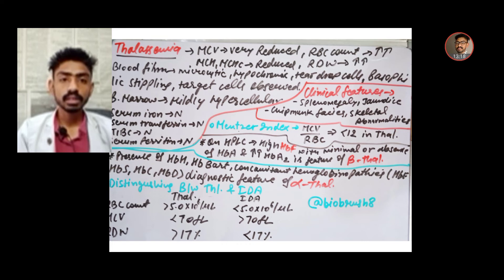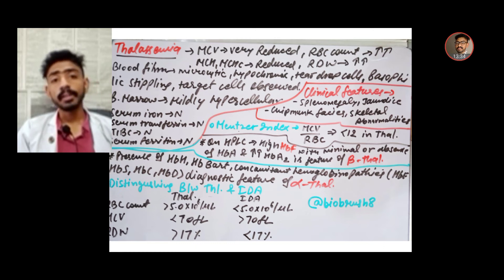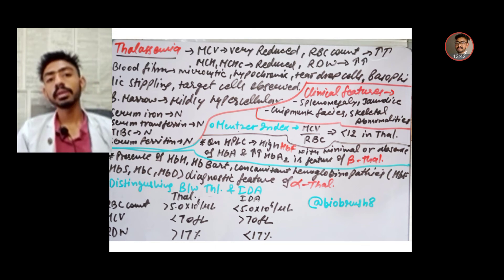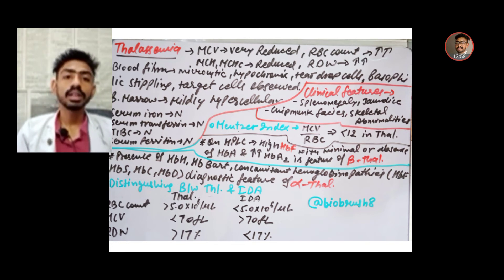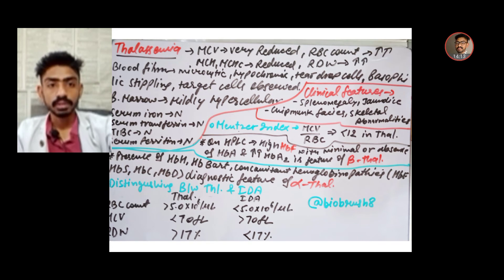To distinguish thalassemia from iron deficiency anemia: in thalassemia, RBC count increases (e.g., above 5.0), MCV is less than 70 fl, and RDW may be increased but can be lower. In iron deficiency anemia, RBC count decreases, MCV is above 70 fl, and RDW is greater than 17%. These distinguishing features are very helpful clinically.